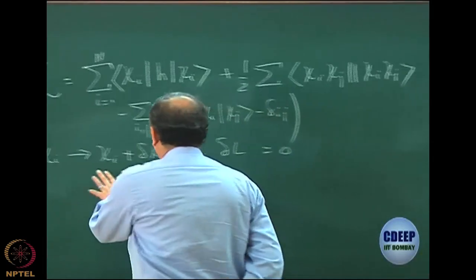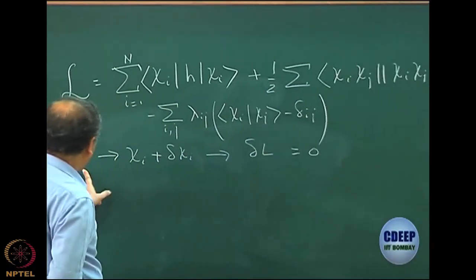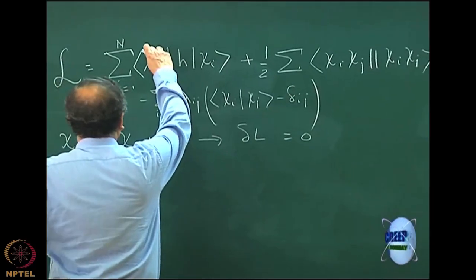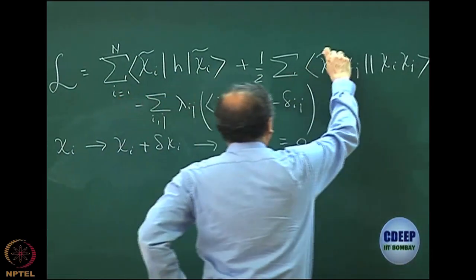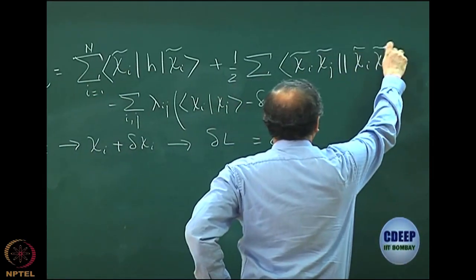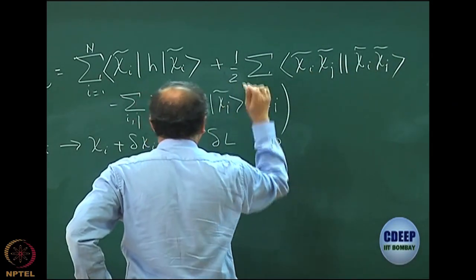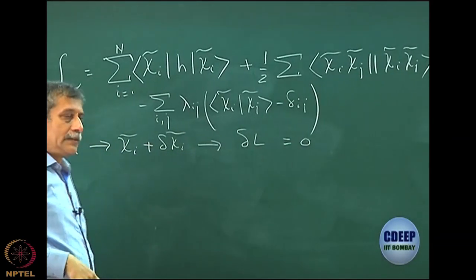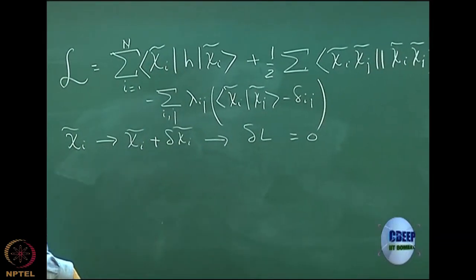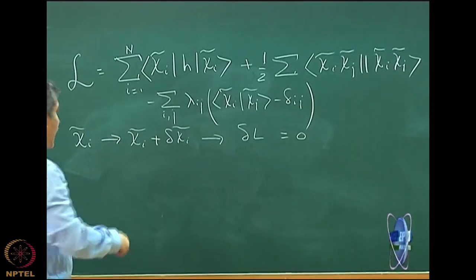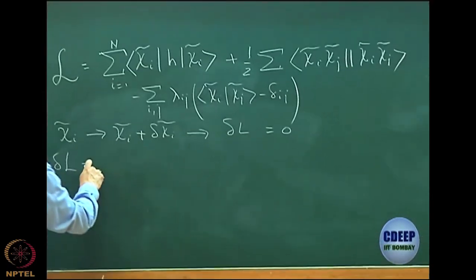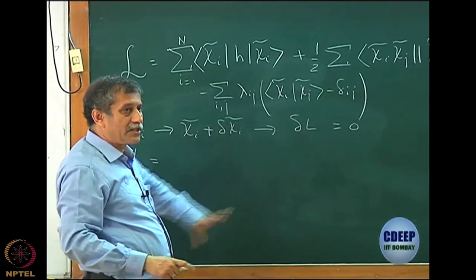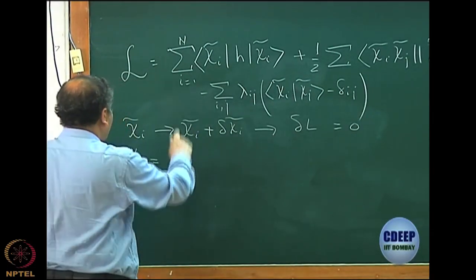What we started to do is write what happens if χᵢ changes to χᵢ + δχᵢ, since these are the trial functionals. We put a tilde on every χᵢ — that is really just a question of notation. Then we rewrite δL, ensuring that we take only the first-order change.